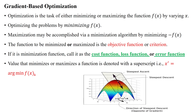Here we will see what is the purpose of gradients in deep learning and machine learning applications. For optimizing the process, that means to reduce the error, we need an optimization approach. The gradient-based optimization approach is very useful to reduce the error in machine learning and deep learning applications.